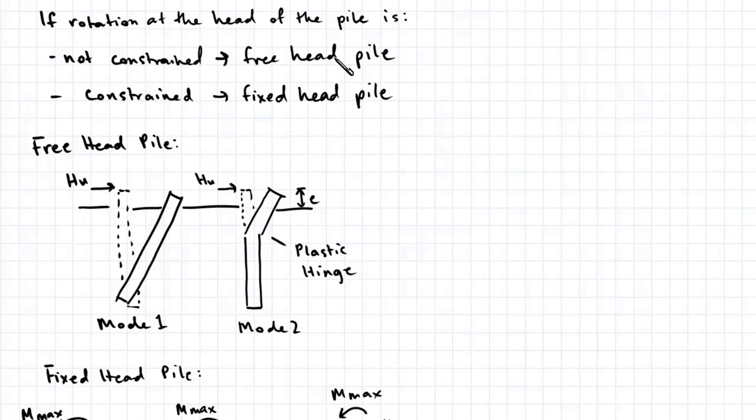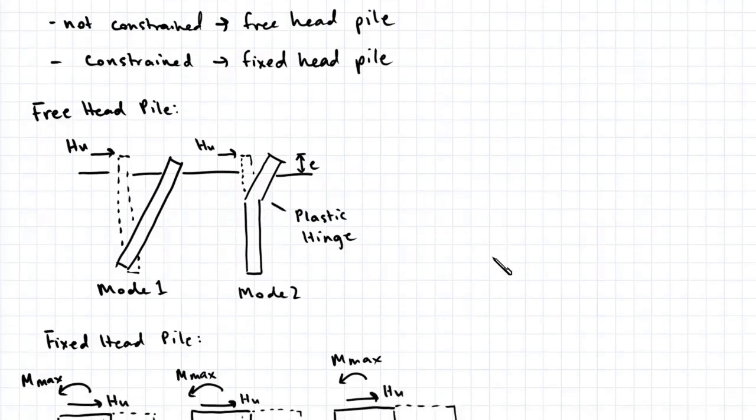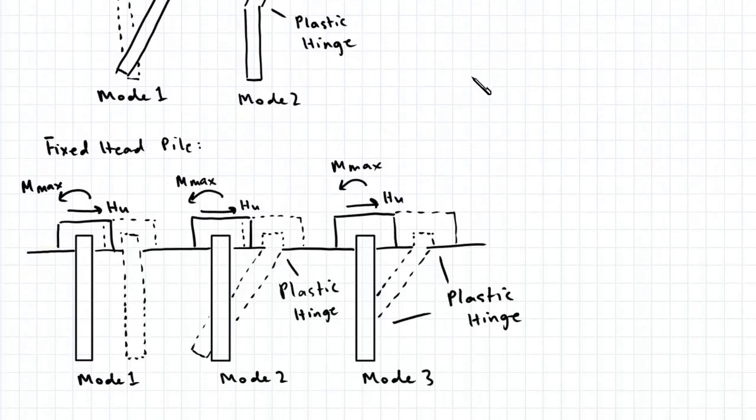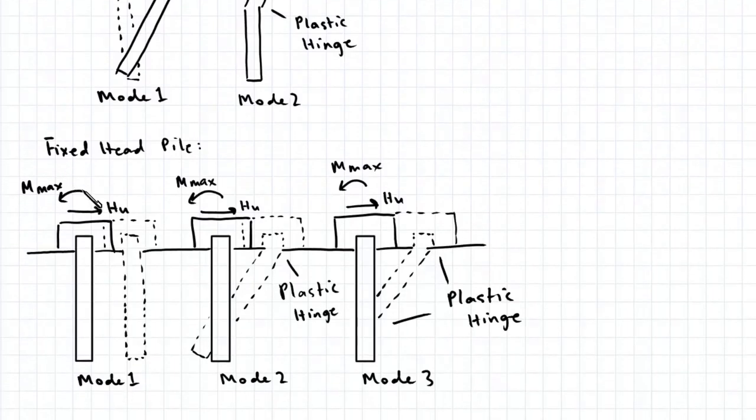In this diagram you can see the possible failure modes for free head piles. In Mode 1, the soil fails resulting in a large deflection and rotation in the pile. In Mode 2, the pile fails before the soil does and a plastic hinge forms.